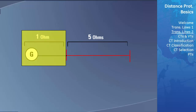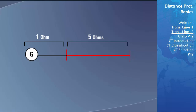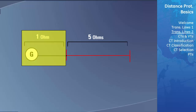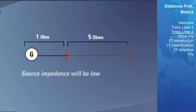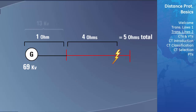The system impedance ratio takes the source impedance — which is the source impedance of the system behind the transmission line — and divides that by the line impedance that you are protecting. If the system behind the transmission line has a strong source, the source impedance will be low. In this configuration, if a fault occurs on the transmission line, the fault current will be very high and the voltage at the location of the PTs will tend to remain stable.